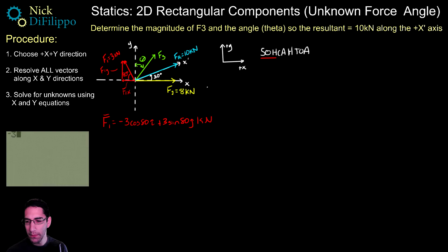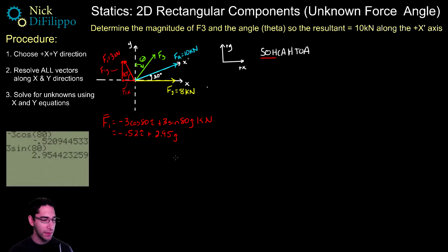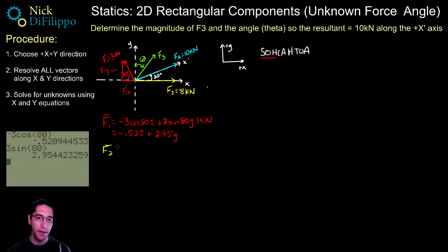Calculating those values: F1x = −0.52i kilonewtons and F1y = +2.95j kilonewtons. For F2, it is already along only the x-axis pointing to the right, which is my positive direction, so F2 = +8i kilonewtons.